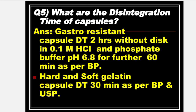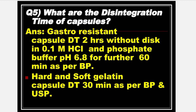Next is: What are the disintegration times of capsules? Answer: Gastro-resistant capsule DT — 2 hours without discs in 0.1M HCl, and phosphate buffer pH 6.8 for a further 60 minutes, as per BP.